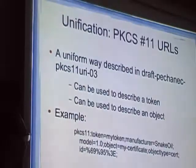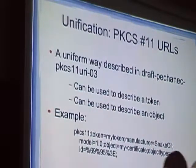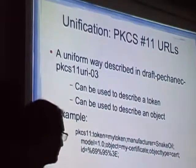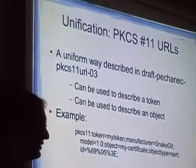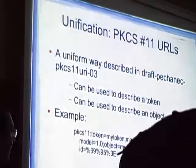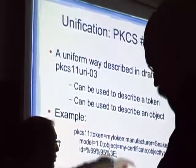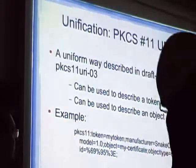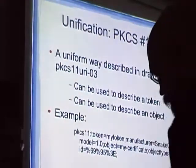PKCS11 URLs can be used to uniquely describe a token and also an object — you can specify both things. This is how it looks like. It's more readable than the PKCS11 helper string, and although it might be a bit intimidating, it's pretty clean. It means: this object is a certificate, it has that ID, it resides on that token, made by this manufacturer and this model.